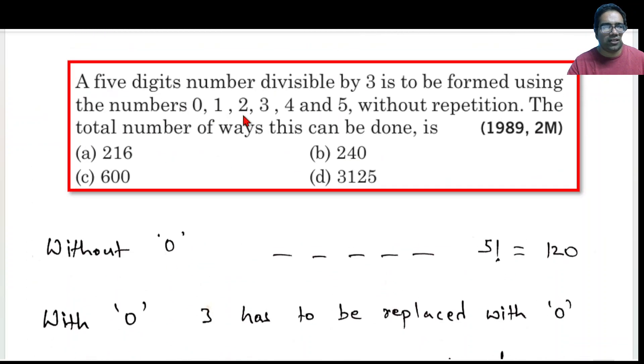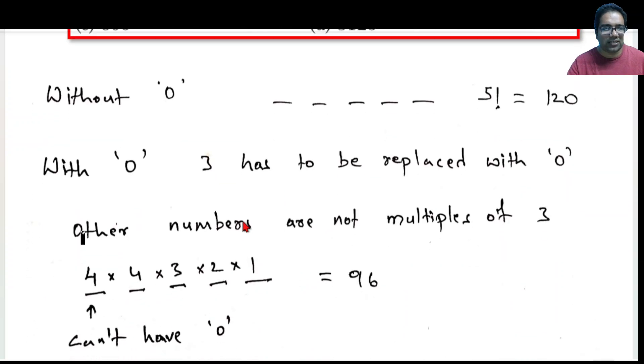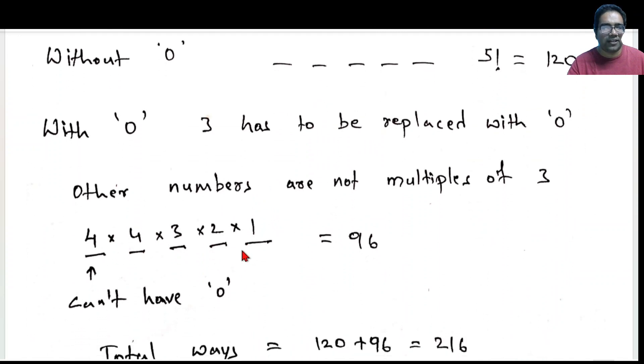Again, 4 options. If the first digit we have chosen as 4, for the second one, we have 0, 1, 2 and 5. For the second one, we have 4 options. Third one, obviously, we will have 3, then 2, then 1.